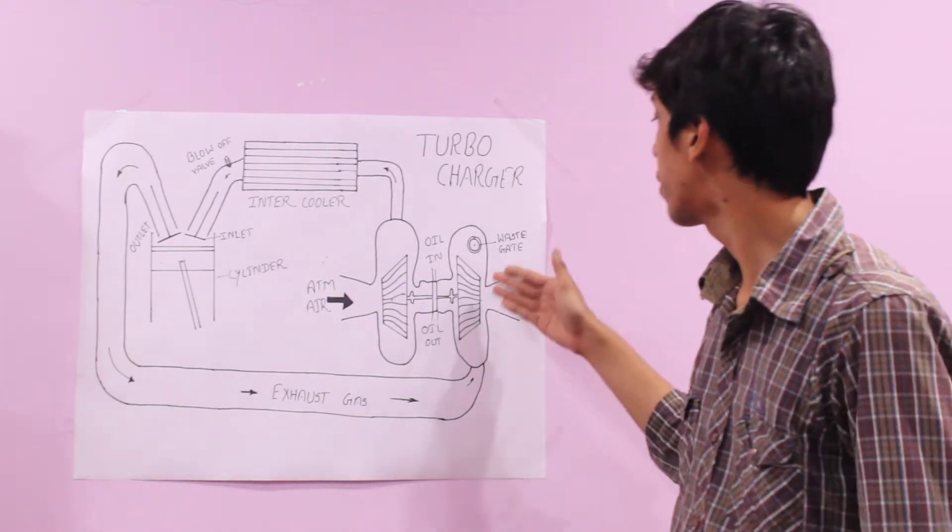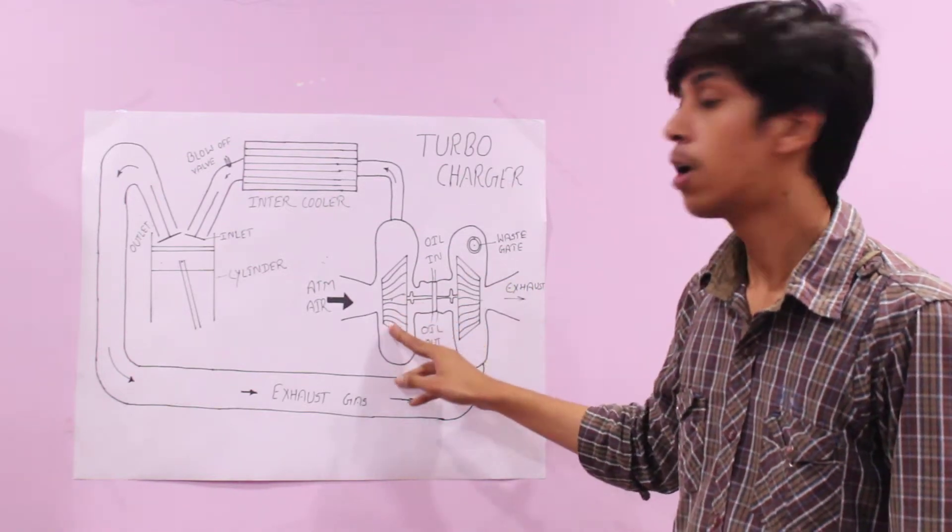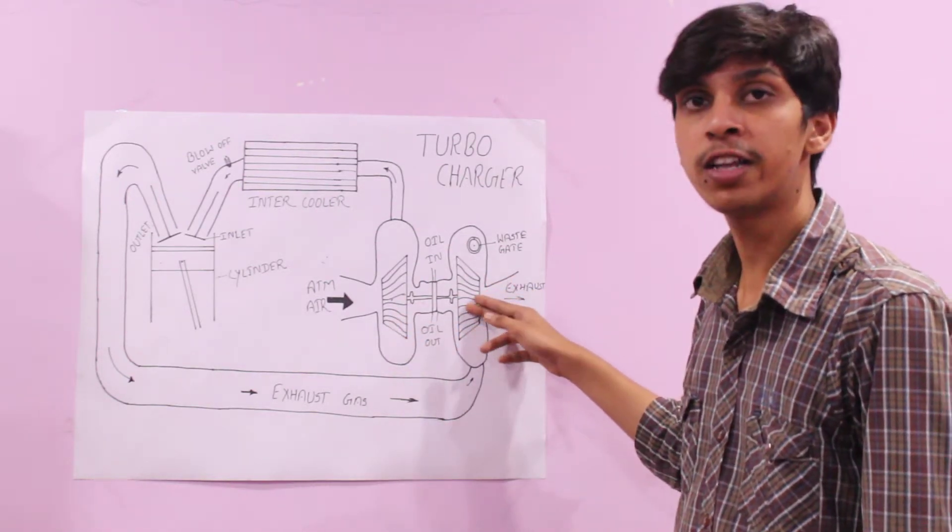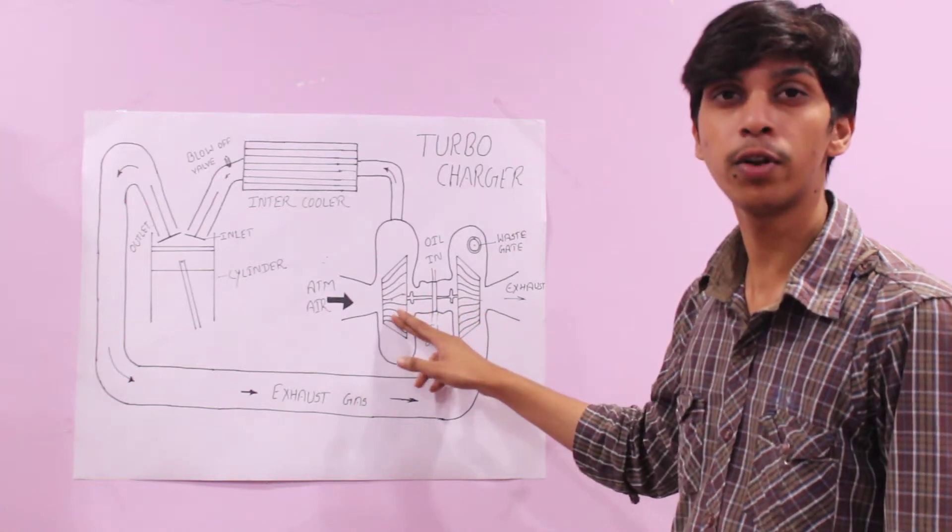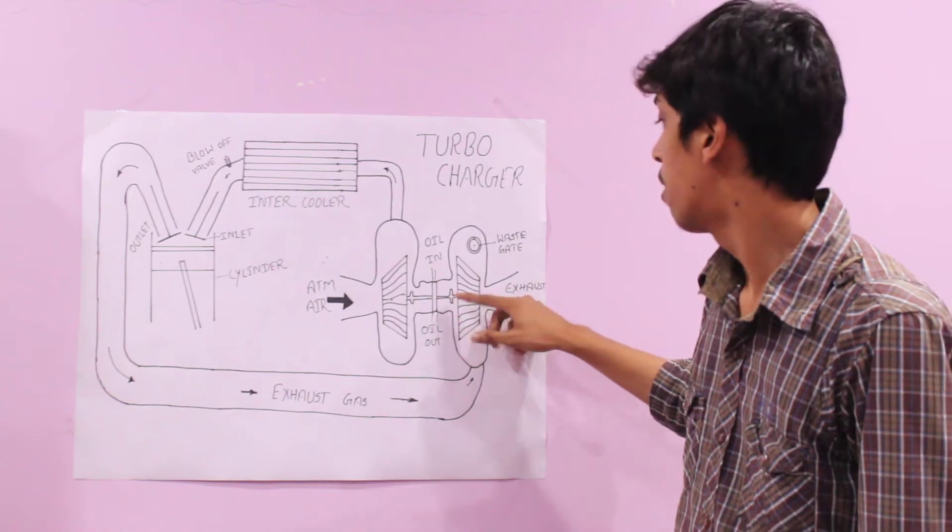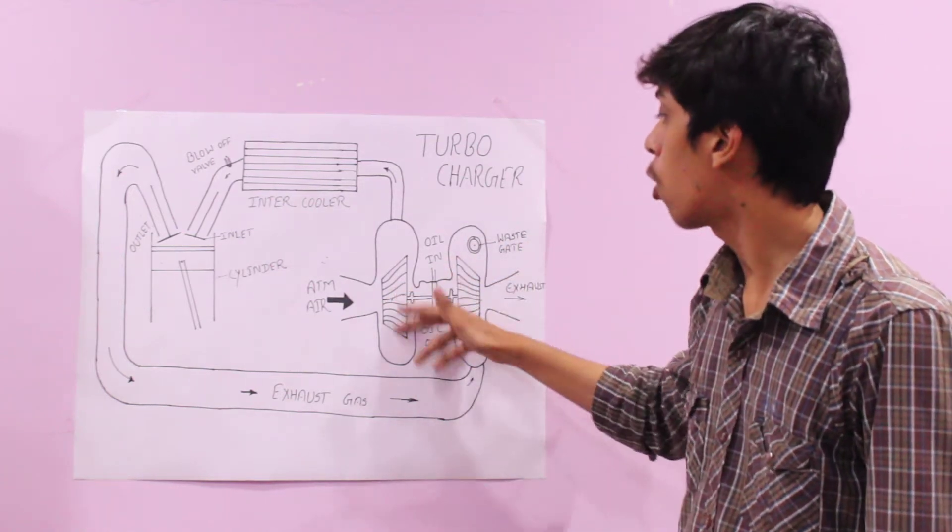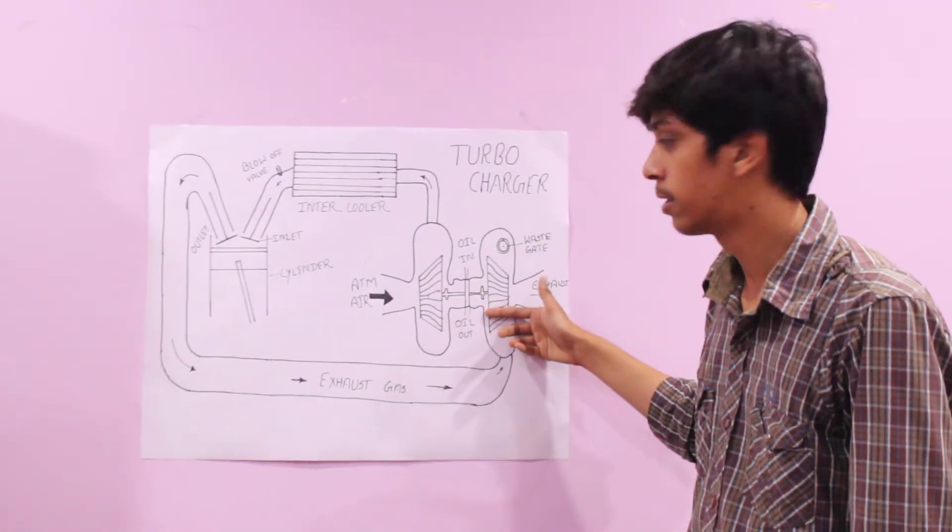The turbocharger is basically made of two impellers. First one is the turbine, another one is the compressor. Generally we use the radial turbine and the compressor is the centrifugal compressor. Both the impellers are coupled with a single shaft. When we spin the turbine, the compressor also rotates because of the coupling.